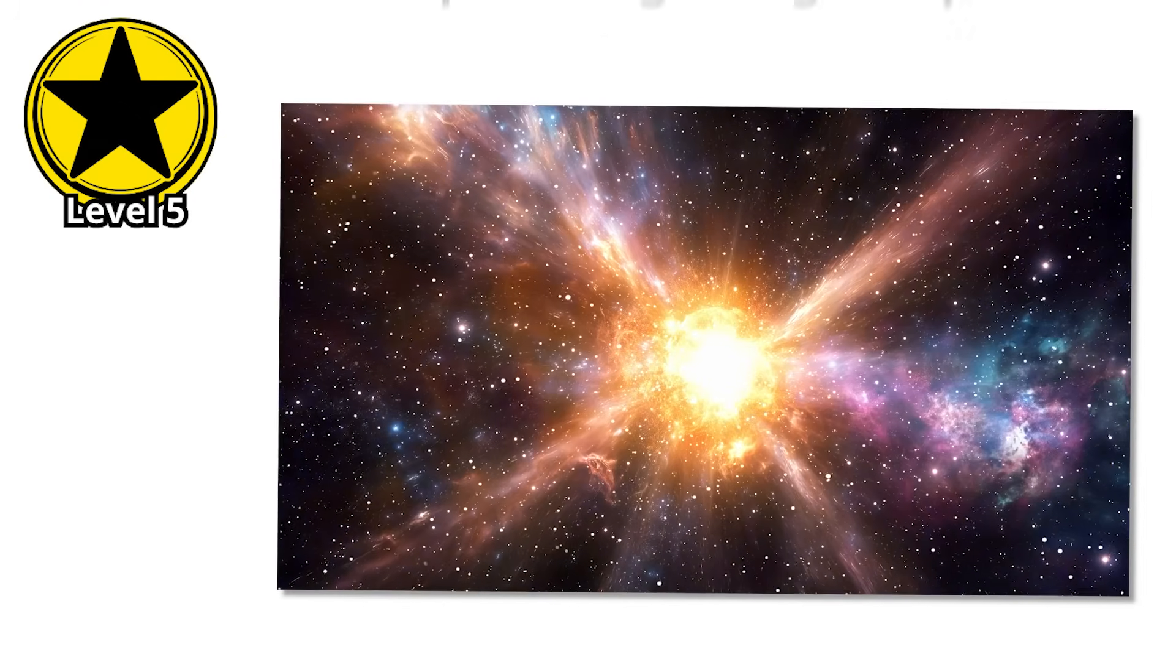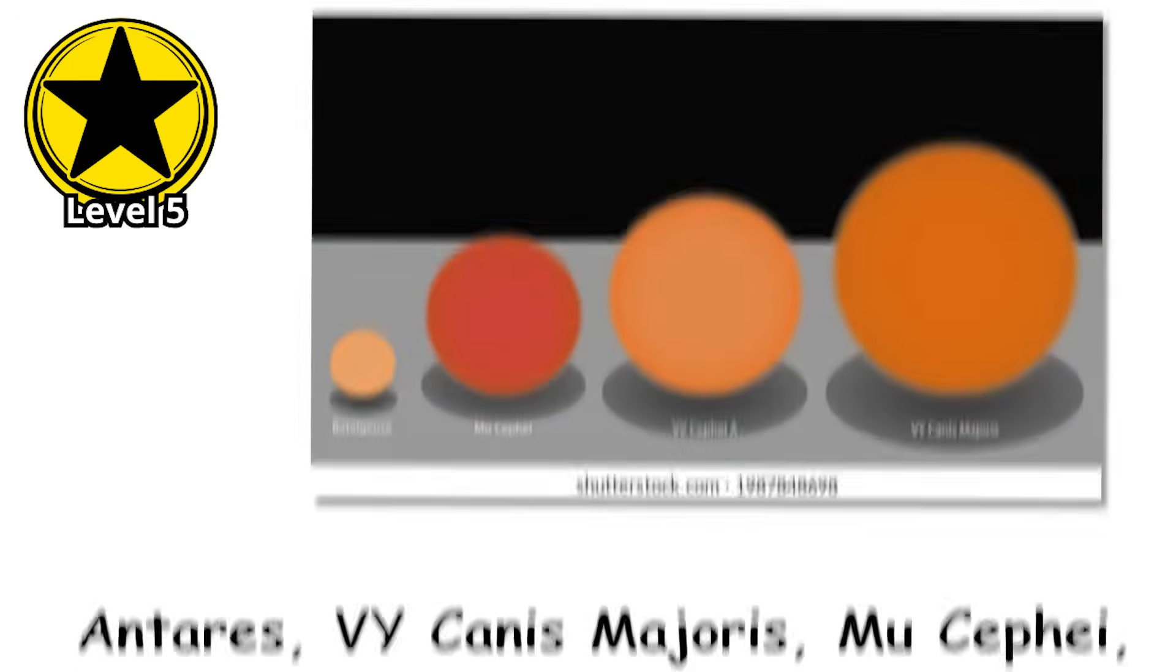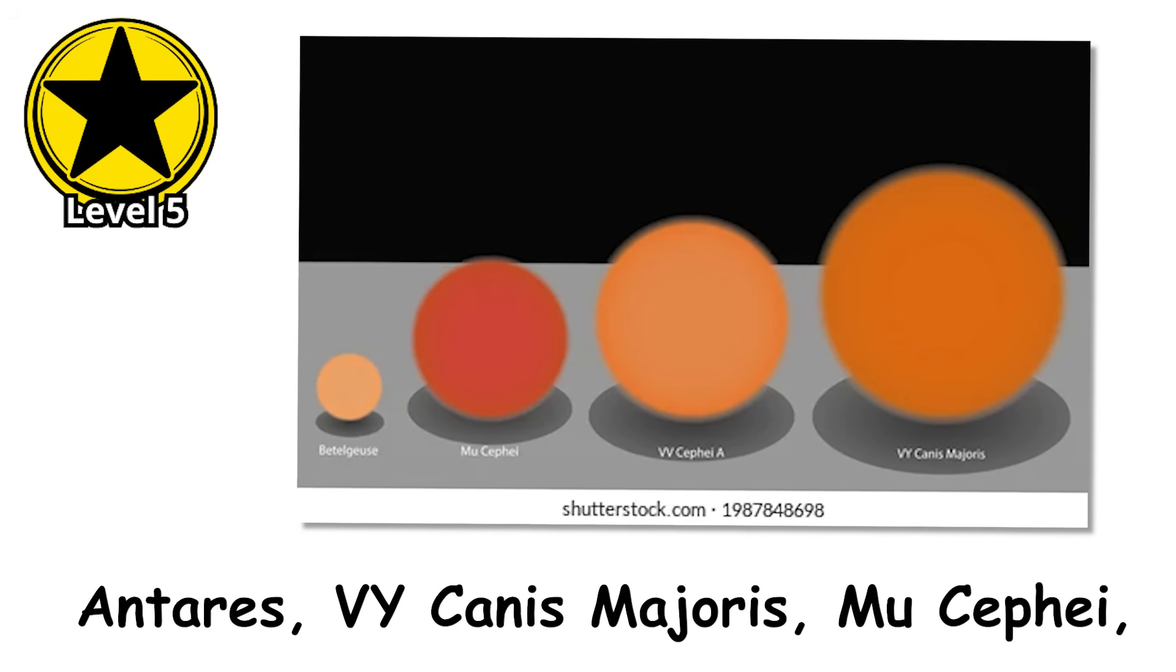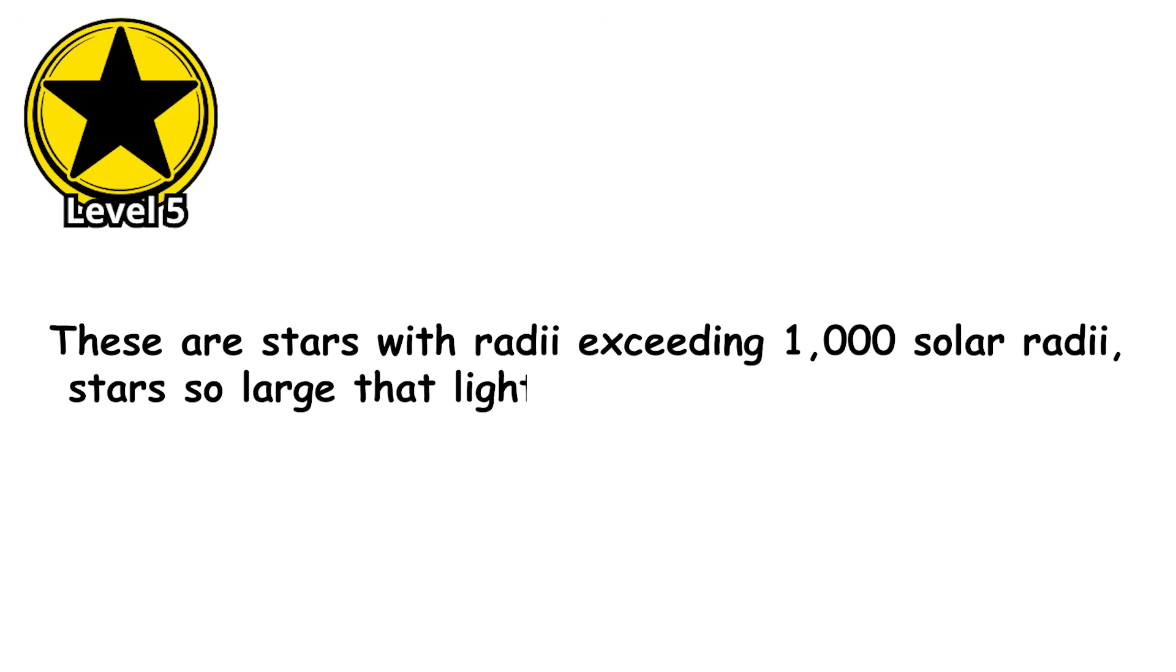The star is unstable, pulsating irregularly, brightening and dimming over periods of months and years. Other red supergiants are even larger. Antares, VY Canis Majoris, Mu Cephei. These are stars with radii exceeding 1,000 solar radii, stars so large that light takes hours to travel from one side to the other.